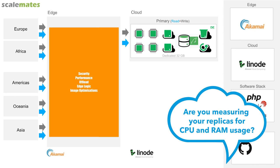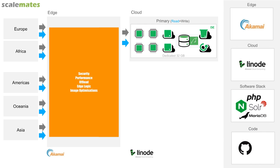For monitoring: I use Datadog for my primary, and in theory I should implement it here too. But Datadog costs per server, and this is still a hobby project. Linode comes out of the box with some tracking mechanisms, so I'll first play around with those. If this were a real customer using Datadog or another tool to track performance, they would set up monitoring instances in the replica locations as well.